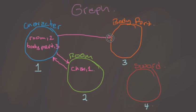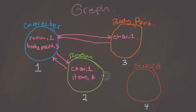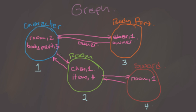The body part might have a property 'character: 1' pointing back to the character. The room might also have 'item: 4' pointing to the sword, and the sword would have 'room: 1'. If a room knows about a sword, the sword should know that the room owns it. Body parts list their character as owner, characters list their room as room, and swords list their room as room. That's how we graph all these processes together.